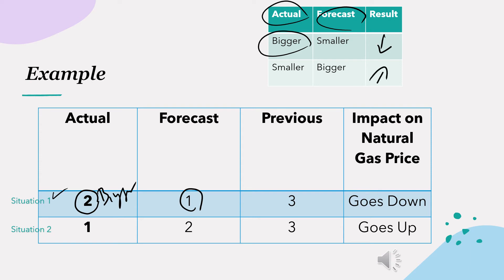In situation two, if the actual is less than the forecast, it means higher demand and lesser supply, so the price of natural gas tends to go up. A smaller actual and bigger forecast means price goes up — for example, actual is 1 and forecast is 2. Though this is not a perfect prediction every time, historically it has been tested to be true with a lower number of failures.